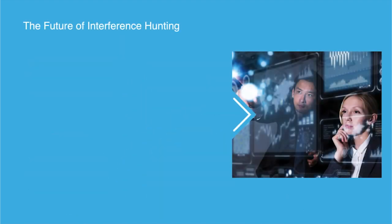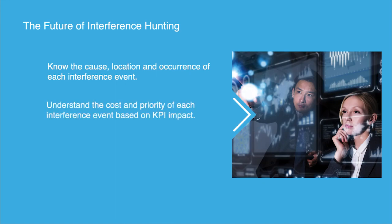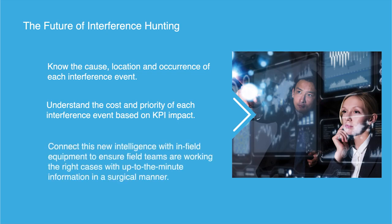As a leading mobile operator, shouldn't you be able to automatically know what is causing interference within your network, exactly where it is coming from and when it is occurring? Shouldn't you be able to automatically understand the cost of each interference event and prioritize numerous events based on KPI impact? With Spectrum Effect's Spectrum Net Solution and PCTEL's C-Wave Interference Locating System, the answers to these questions are yes. The solution can be quickly turned up using existing data within your network in a highly affordable manner, and today you will see how.